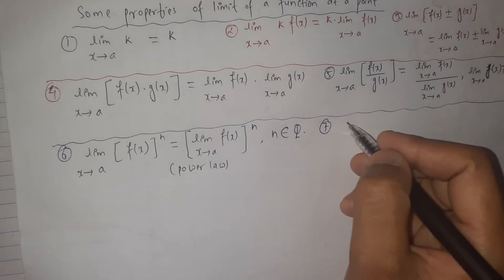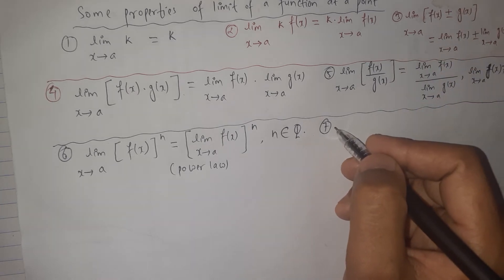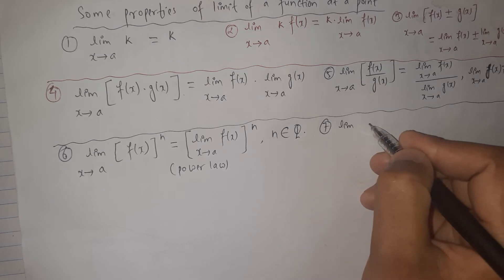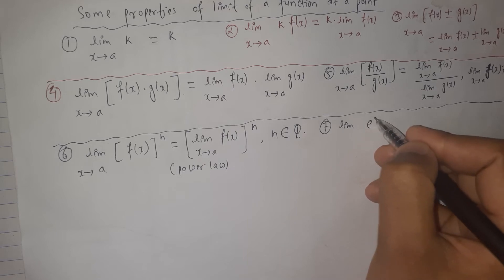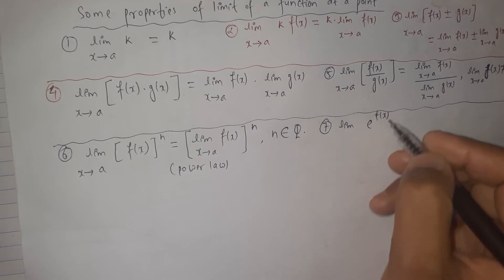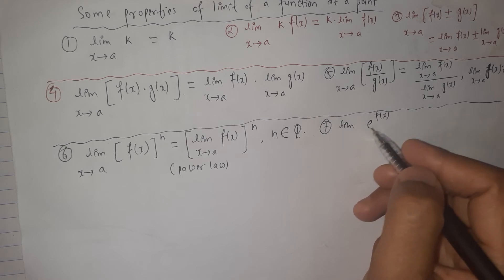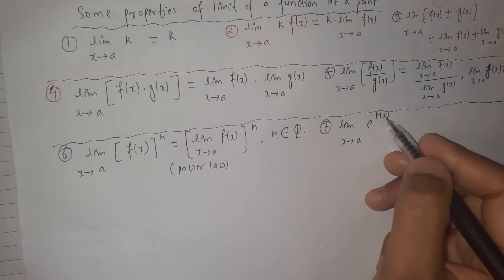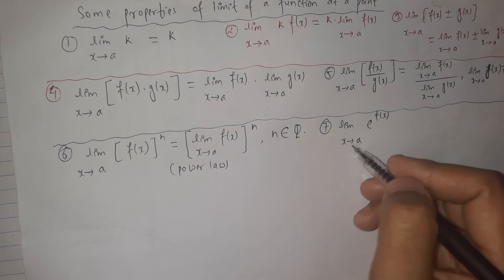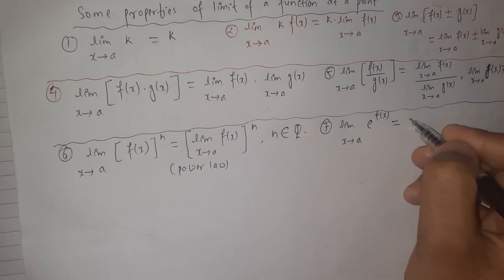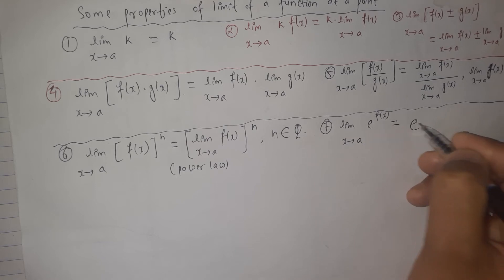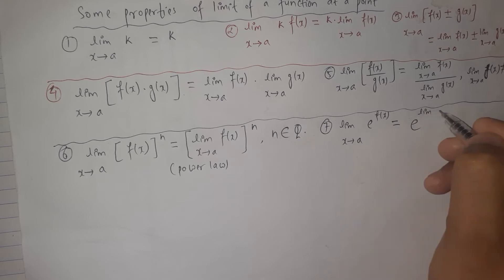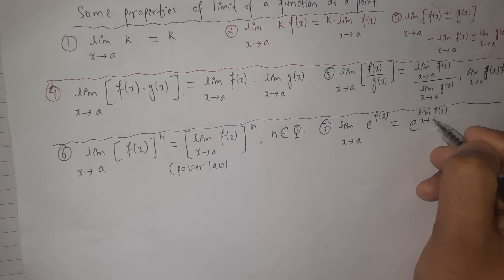Property seven is about exponential functions. The limit of e to the power F(x) when X approaches to a is the same as e raised to the power of the limit of F(x) when X approaches to a. Here, e is the Euler number, and the limit moves into the exponent.